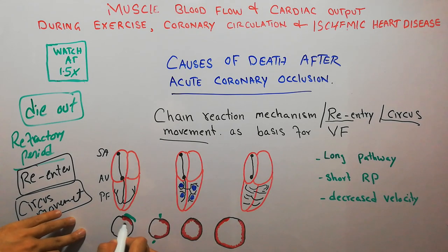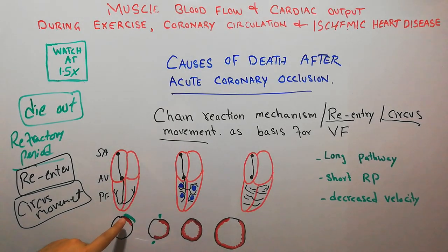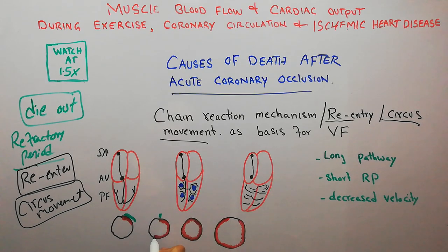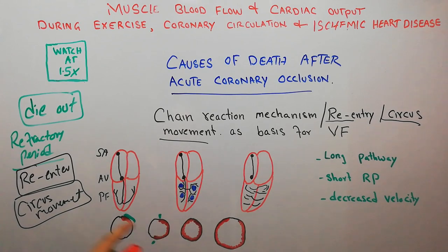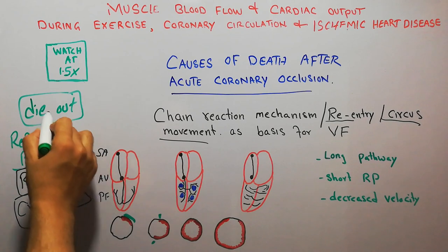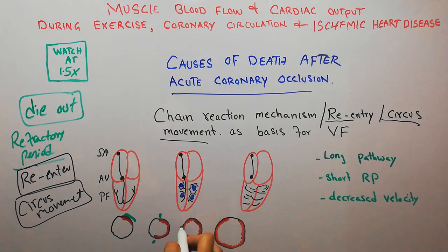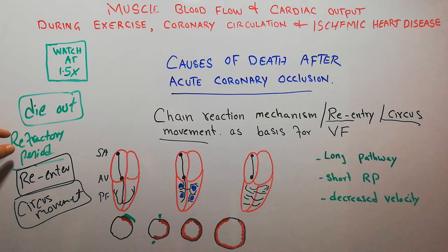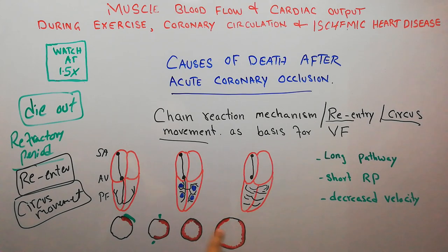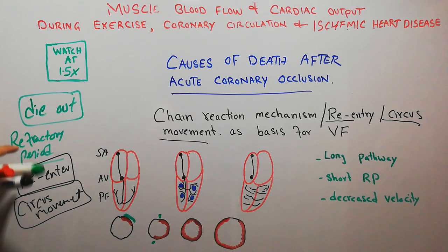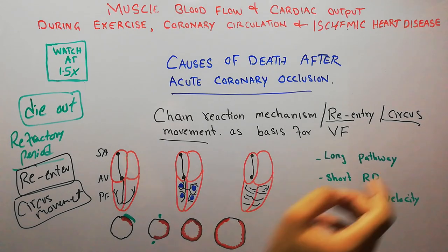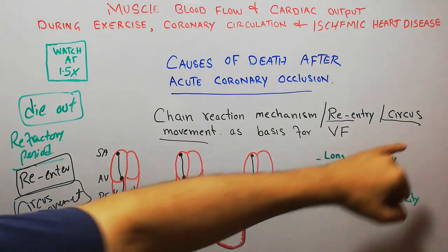When the impulse has travelled to this place — it started here — this portion of the heart was initially in the refractory period and could not be activated. Once it was activated, it could not be activated for a certain period of time. The impulse has travelled to this point, and this portion cannot be activated for a certain period — the refractory period. After the impulse has died out, the whole ventricular muscle is in the refractory period. But there are some conditions in which the pathway is prolonged. This is a small pathway; this is a long pathway. If the pathway is prolonged, the speed of the impulse is decreased, and the refractory period is shortened — all these conditions lead to re-entry phenomena and circus movement.